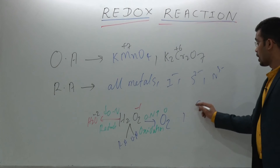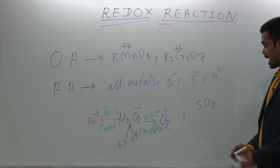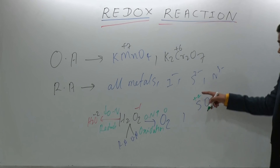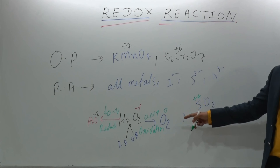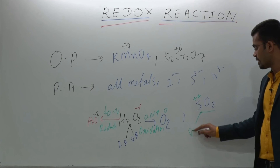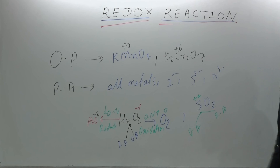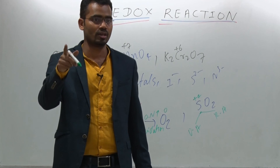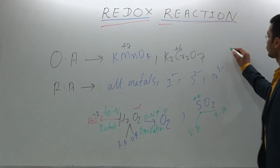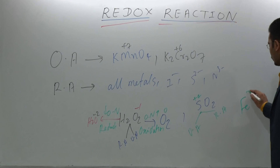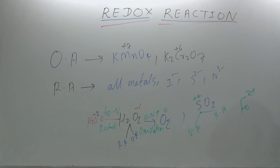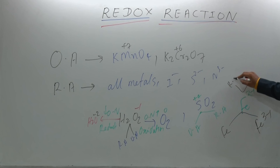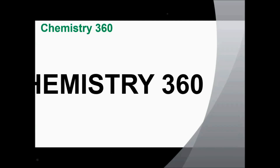Another example is SO₂. It has oxidation state +4. It can go to +6 as well as −2. Therefore, it is both an oxidizing agent as well as a reducing agent. Any compound with an intermediate oxidation state will act as both an oxidizing agent and a reducing agent. For example, Fe²⁺ — it can form Fe³⁺ — so it is also both a reducing agent as well as an oxidizing agent.